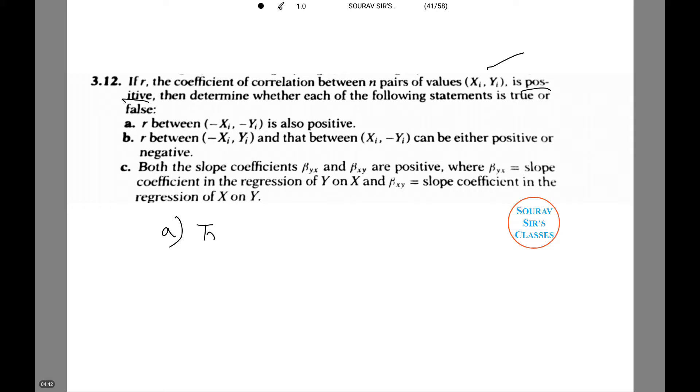r between (-xi, -yi) is also positive. The value is true. Let A and C equal minus 1, and B equals D. Writing it in a different manner, thus we obtain that r can lie between minus xi and yi and is also positive. Now let me clear the screen for number B.